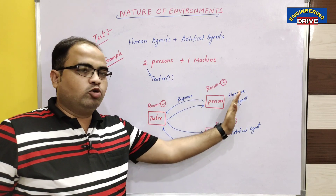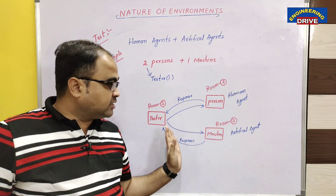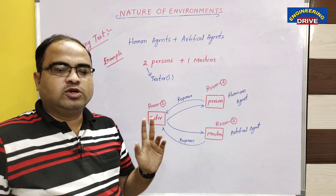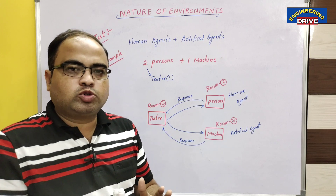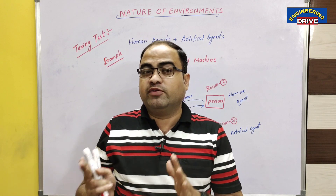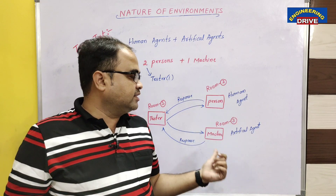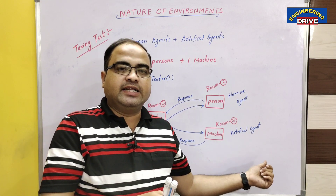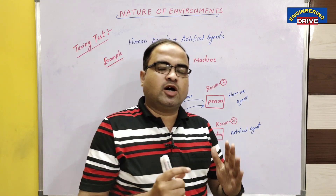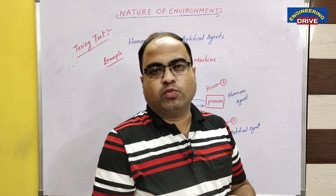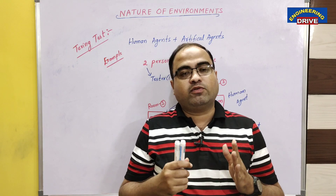The tester doesn't know where the human agent is, doesn't know where the machine is, and doesn't know who sent which reply. Simply at the end, the tester gets two responses, and if unable to differentiate the machine's response from the person's response, then we can say the machine is intelligent. This concludes the Turing test, which is used to find out the intelligent behavior of the system.